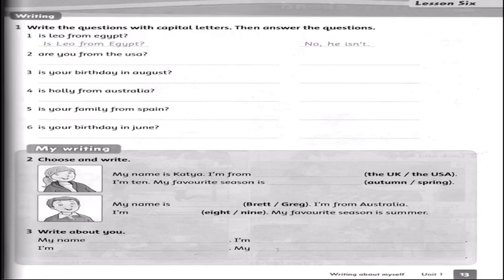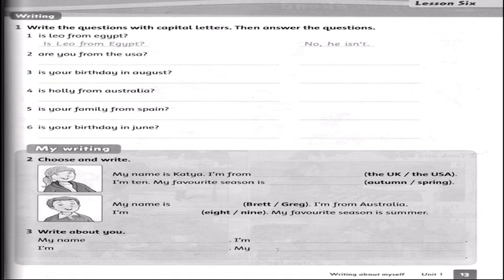Then we have page 13 — the last page. We have writing: write the questions with capital letters, then answer the questions. We have to fix these questions. For example: 'is leo from egypt?' — it's wrong. 'Is' is at the beginning, so we change 'i' to capital I. Leo is a name, so we change 'l' to capital L. Egypt is a country, so we change 'e' to capital E.